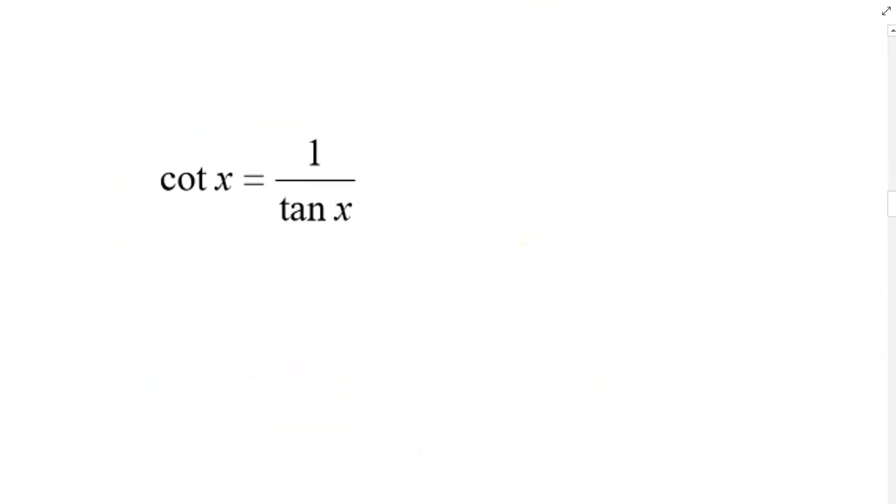We have cotan x equals 1 over tan x. So I'm going to recommend that because cotan and tan are themselves kind of complicated, we're going to unpack this first.